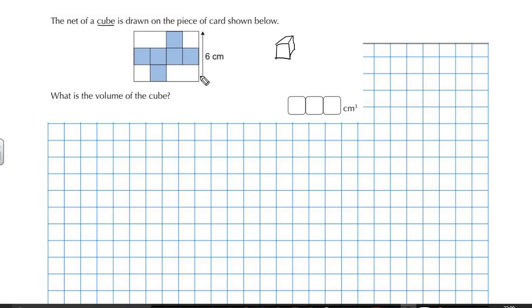If this is six centimeters, then each of these, there's one, two, three, these each have to be two. Six divided by three equals two. So this has to be two, this has to be two, and this has to be two. Do you agree? Two plus two plus two, that's six. So we know what each of the edges are.